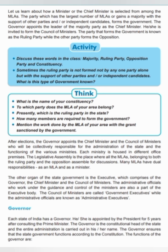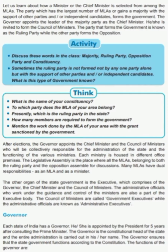From among the members of the Legislative Assembly, the Chief Minister decides which members of the party to take into the Ministry. On the recommendation of the Chief Minister, the Governor appoints those members as Ministers. The Chief Minister allots different portfolios to these sworn-in Ministers, and in this way the whole Cabinet — or the whole Ministry — is formed. Let's discuss these key words: Majority, Ruling Party, Opposition Party, and Constituency.